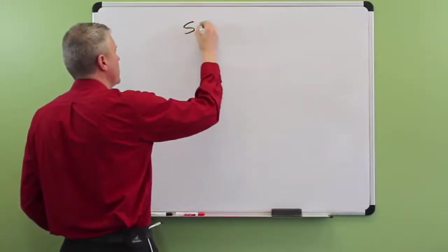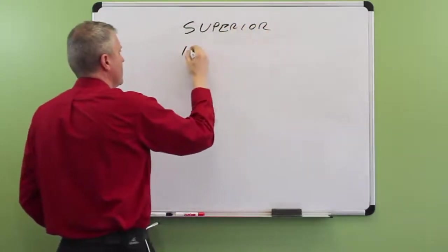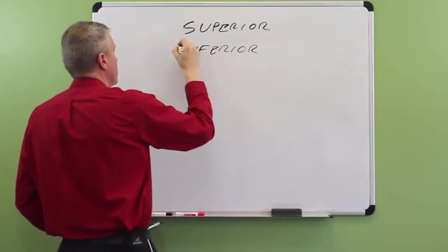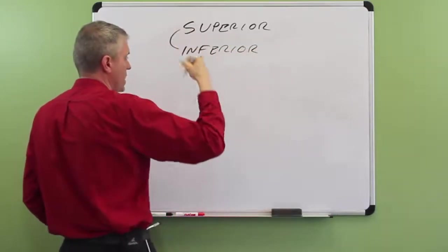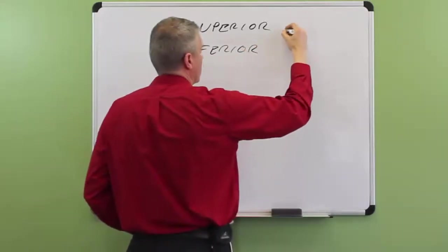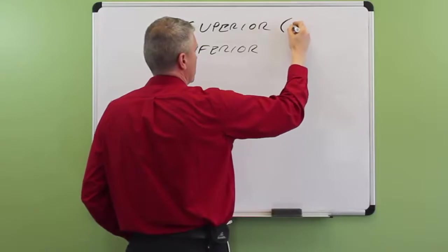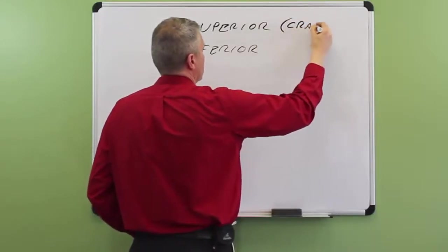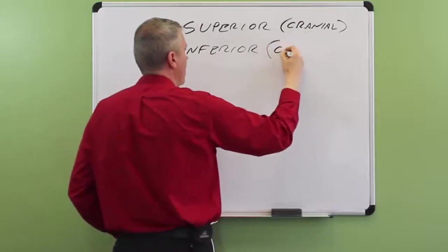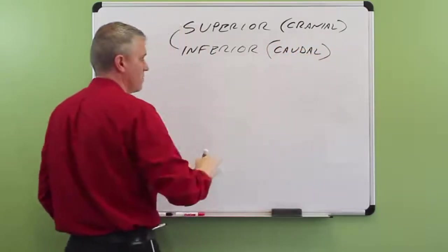Let's do superior and inferior. Superior means towards the top of the body or upward. Inferior means going downward. There are some other words that mean the same thing. Cranial is the same thing as superior. And caudal is the same thing as inferior.